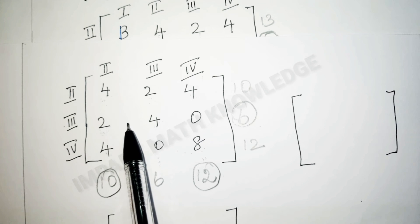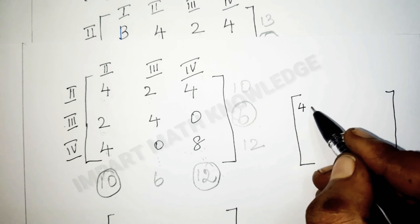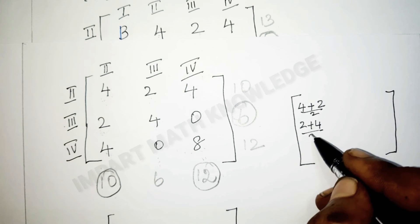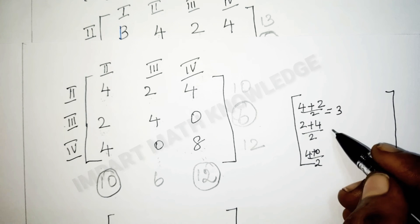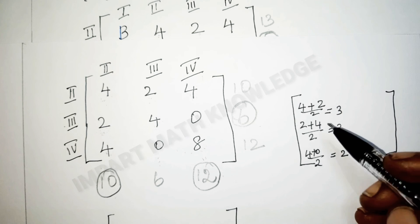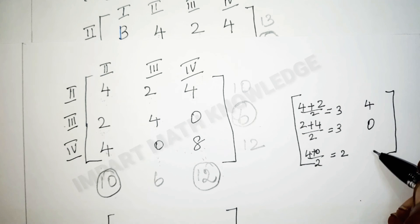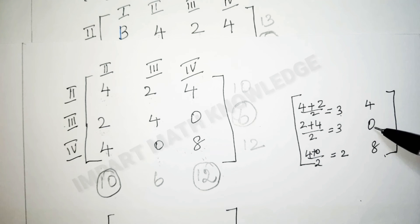Since no single dominance exists, we use the average method. Take the average of the 2nd and 3rd columns: (4+2)/2 = 3, (2+4)/2 = 3, (4+0)/2 = 2. The 4th column values are 4, 0, 8. Comparing the average with the 4th column: 4 is greater than 3, but 0 is less than 3 — no dominance.